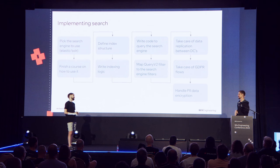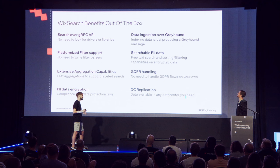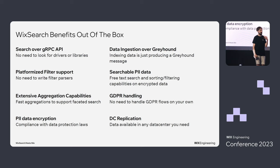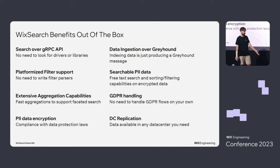We have Wix Search at Wix. Wix Search is easy to use: search over gRPC API, which already has platformized filter support. Data ingestion is over Greyhound, so everyone knows how to do it. PII data is searchable — it's encrypted and searchable. GDPR handling and data replication are also taken care of.